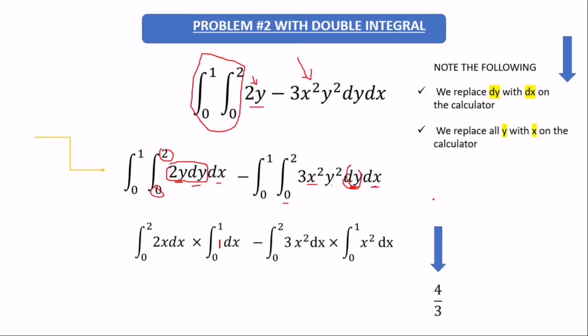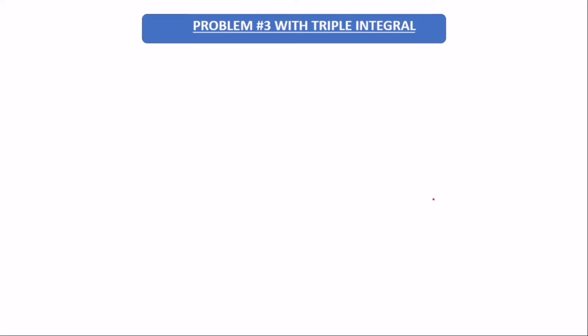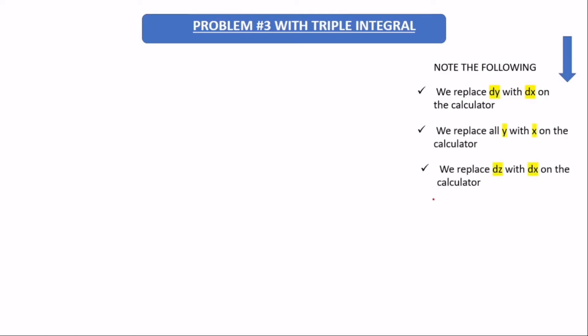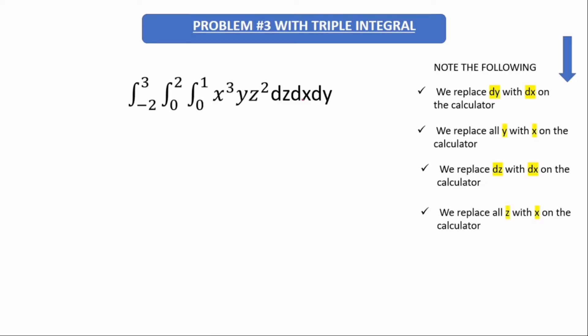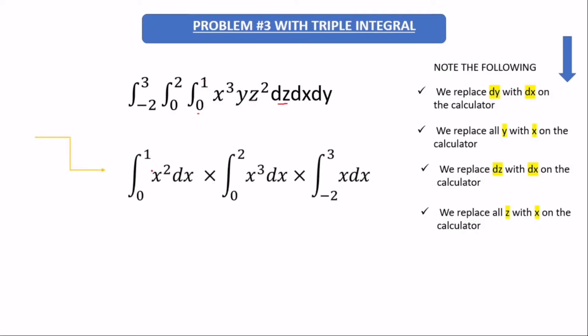Now we are moving on to the triple integral. With the triple integral it's the same idea, but we should know the following: replace dy with dx, and replace dz with dx as well. So all variables — x, y, and z — are replaced with x on the calculator. Then you match each variable with its corresponding interval. The z comes first, so z squared with interval from zero to one becomes x squared dx on the calculator.